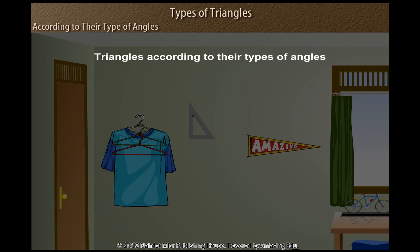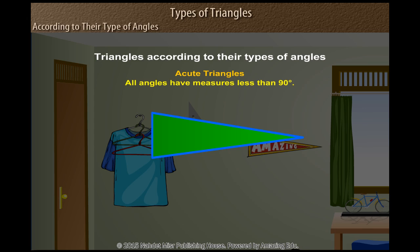There are three types of triangles denoted by their type of angles. Acute triangles: all angles have measures less than 90 degrees.